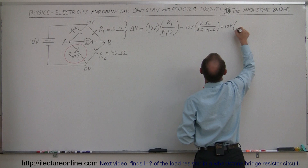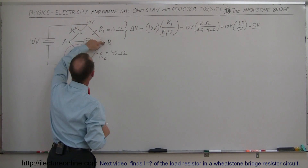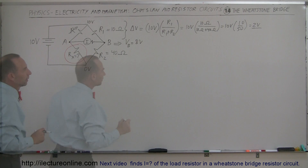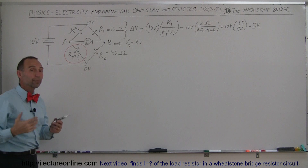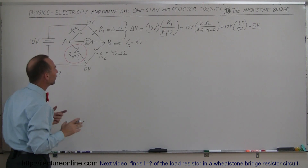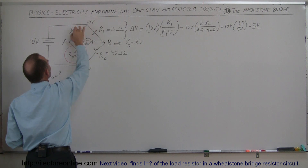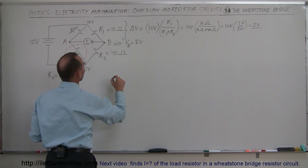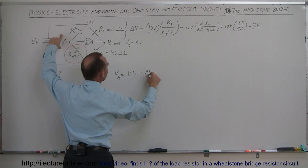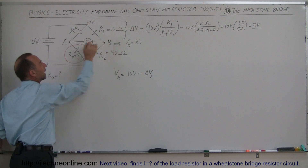That equals 10 volts times 10 over 50, which is one-fifth, which equals 2 volts. So the potential difference from that point to that point is 2 volts, which means the voltage at B is equal to 8 volts. Now, if we do not know what this resistance is — that's actually the purpose of the Wheatstone Bridge, to very accurately determine the resistance of that resistor — we know that if the potential at A equals the potential at B, then the voltage drop across the left side must also be 2 volts, and therefore the potential at A equals the potential at B.